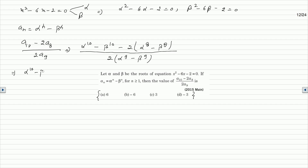Expanding, the numerator becomes alpha to the power 10 minus beta to the power 10 minus twice of alpha to the power 8 minus beta to the power 8. This is divided by twice of alpha to the power 9 minus beta to the power 9.